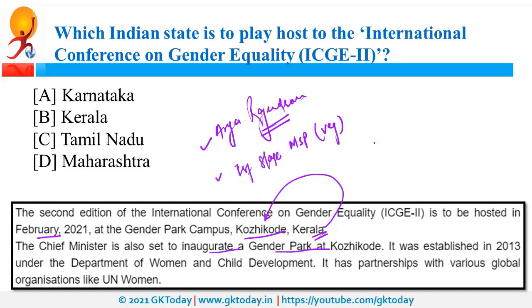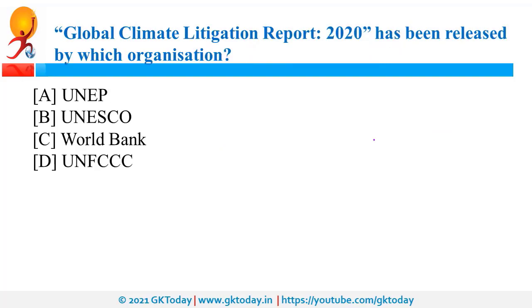Kerala was also in news because of the 'One School, One IAS' initiative. Under this initiative, coaching facilities will be provided to poor students.